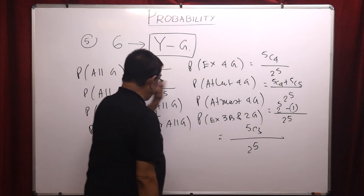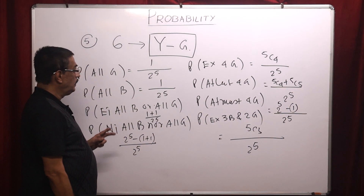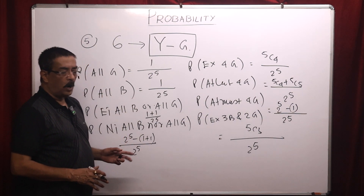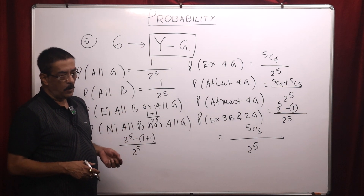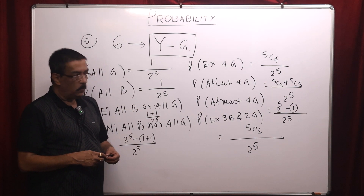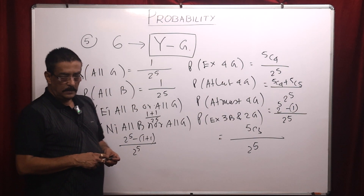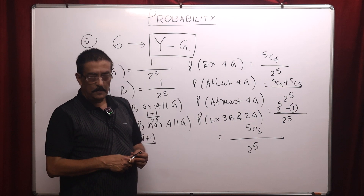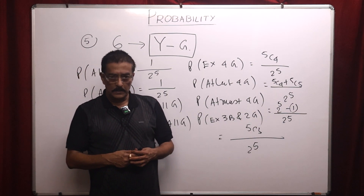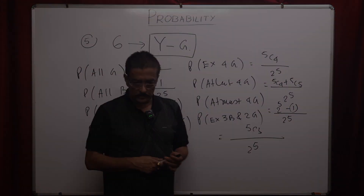Exactly three boys and two girls means three boys automatically means two girls, so 5C3 over two to the power five. This question is given by TCS — the most popular pattern involving either girls and boys or head and tail. These are sufficient to cover all types of problems in coin. Many thanks for watching this video. Please subscribe to our channel MassSony and press the bell icon so you get notifications. Thank you very much.